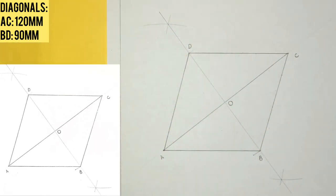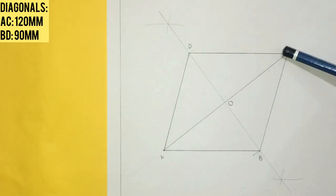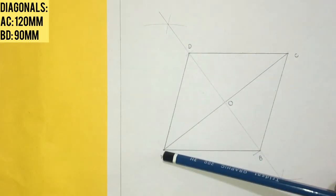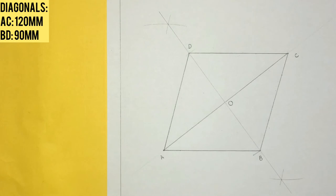Now I'll be measuring A to B, B to C, C to D, and D to A to check that the lengths are equal.